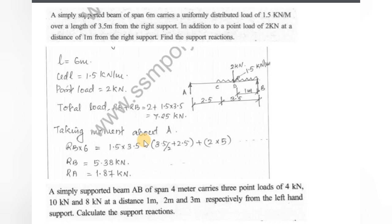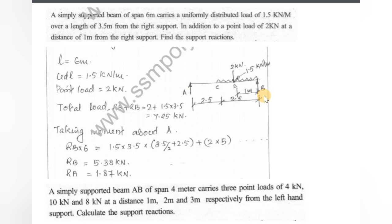Part B problem: A simply supported beam of span 6 meters carries a uniformly distributed load of 1.5 kN/m over a length of 3.5 meters from the right support. In addition, a point load of 2 kN acts at a distance of 1 meter from the right support. Find the support reactions. We draw the figure, marking the span as 6 meters with the UDL of 1.5 kN/m over 3.5 m from the right support.